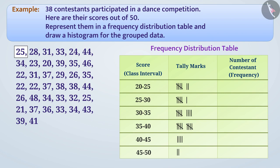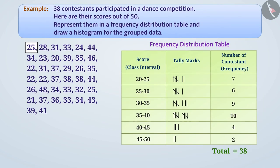After this, we will count the tally marks from which we will find the frequency of the class interval. We will mark it in the third column. In this way, we have made a frequency distribution table.